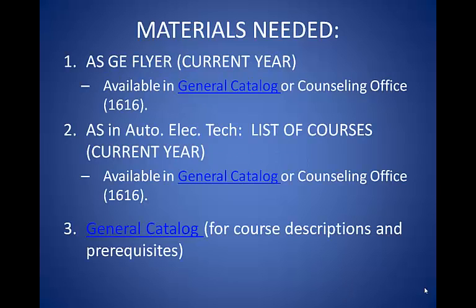Before getting started, you will need the following materials. First, the AS (Associate of Science) General Education GE Flyer for the current year, available in the online general catalog or in the Counseling Office, Room 1616.